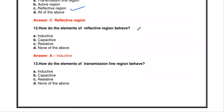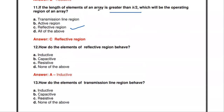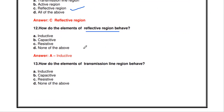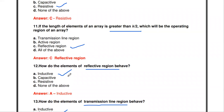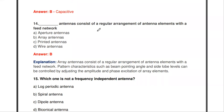How do the elements of the reflective region behave? Since the elements have length greater than lambda/2, they work as inductive in nature. How do the elements of the transmission line region behave? In the transmission line region, the elements behave as capacitive in nature. So: transmission line region = capacitive, active region = resistive, reflective region = inductive.